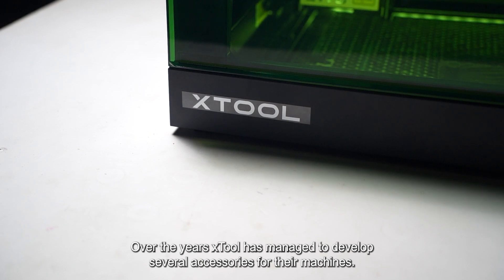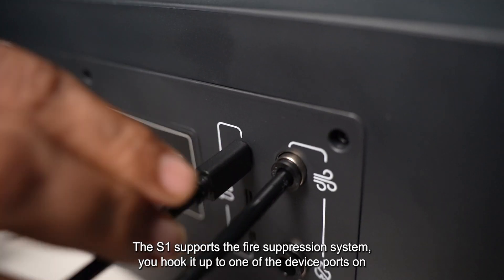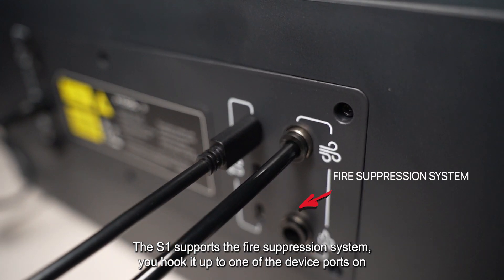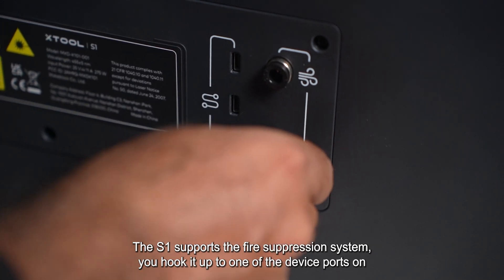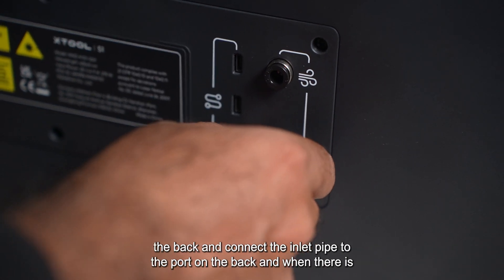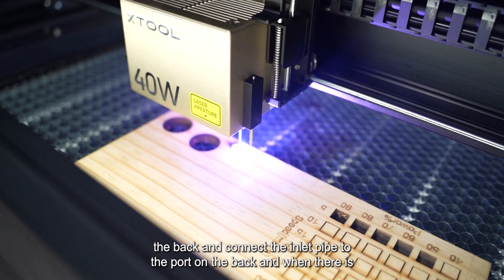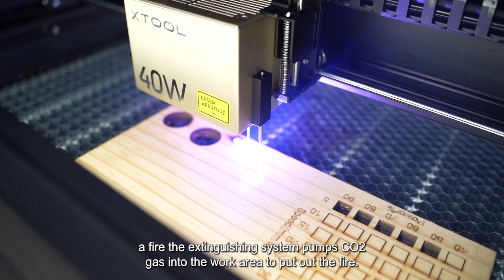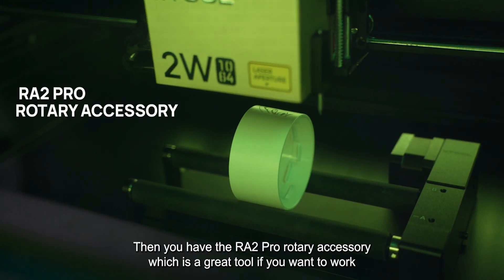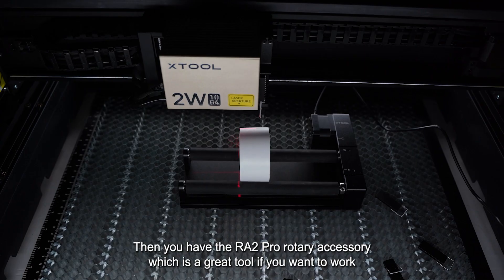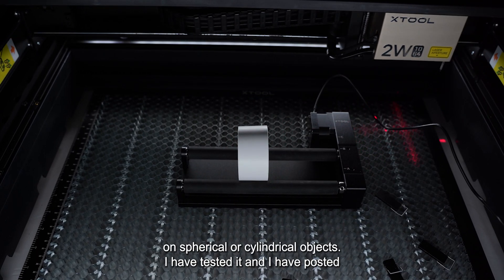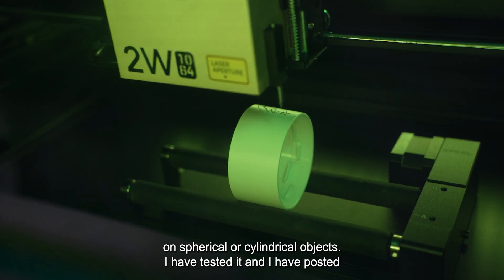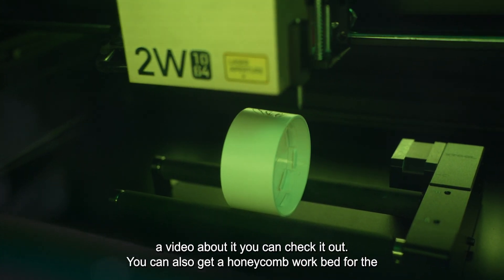Over the years, Xtool has managed to develop several accessories for their machines. The S1 supports the fire suppression system. You hook it up to one of the device ports on the back and connect the inlet pipe to the port on the back. And when there is a fire, the exhaust system pumps CO2 gas into the work area to put out the fire. Then you have the RA2 Pro rotary accessory, which is a great tool if you want to work on spherical or cylindrical objects. I have tested it and I have posted a video about it. You can check it out.